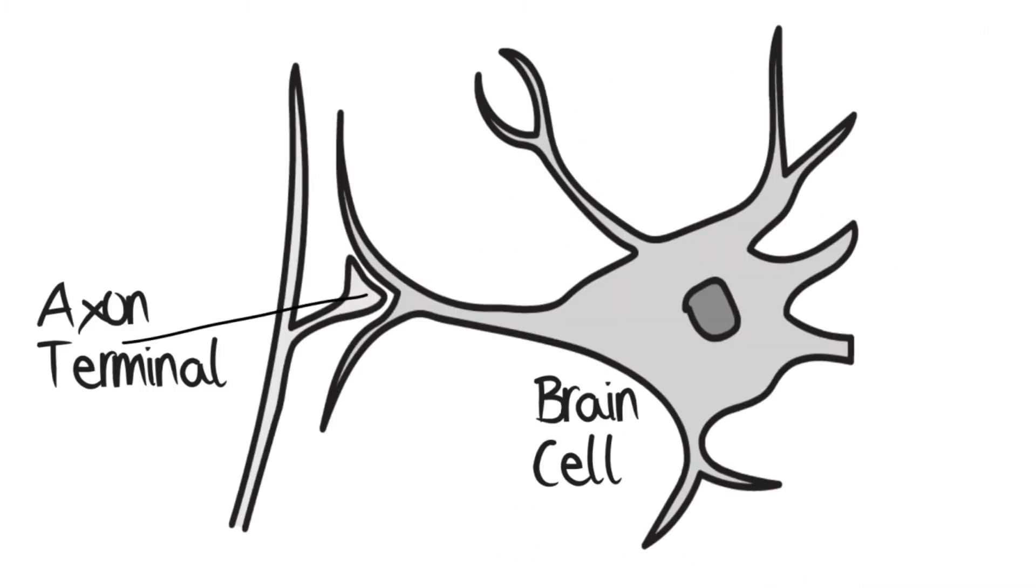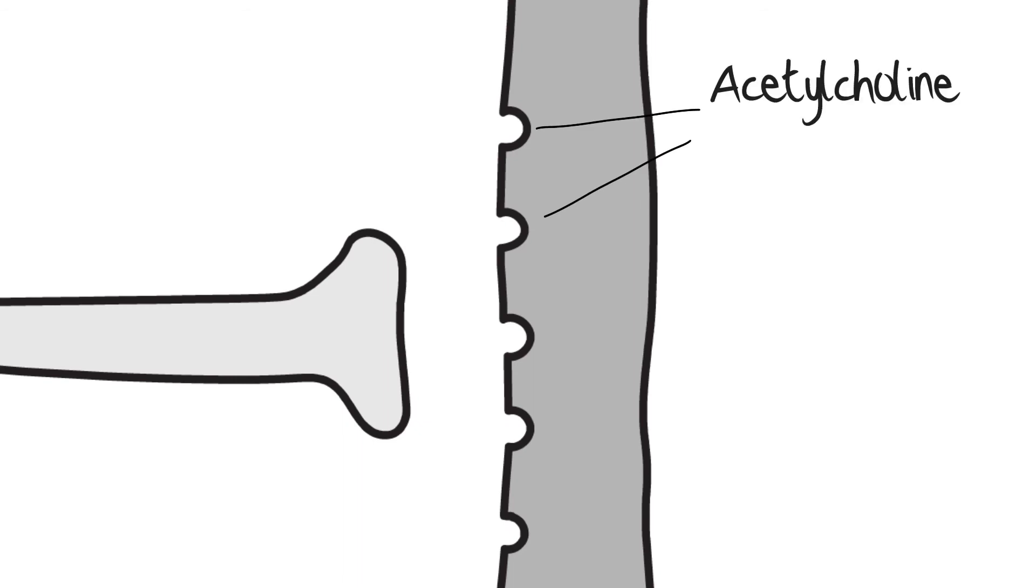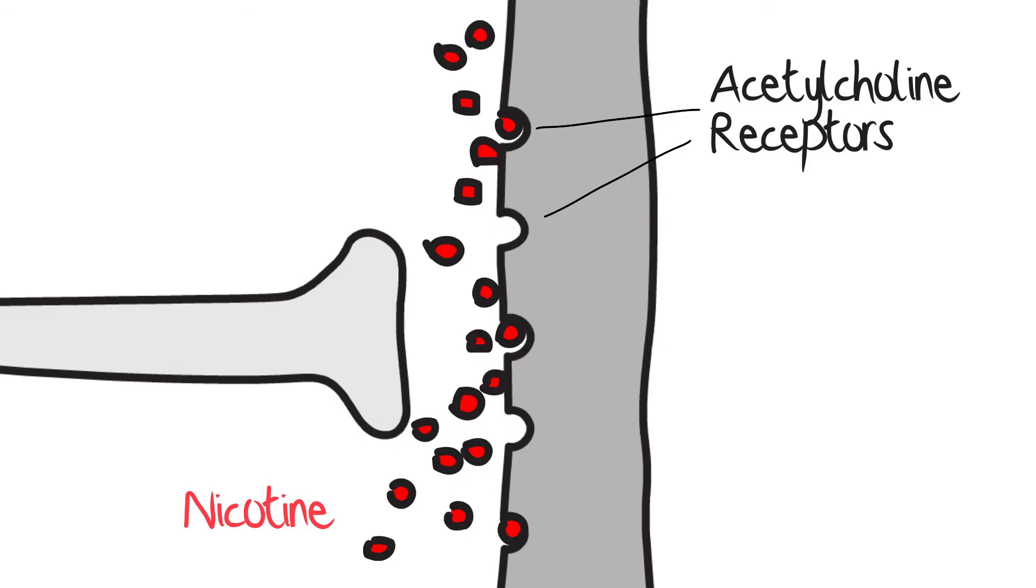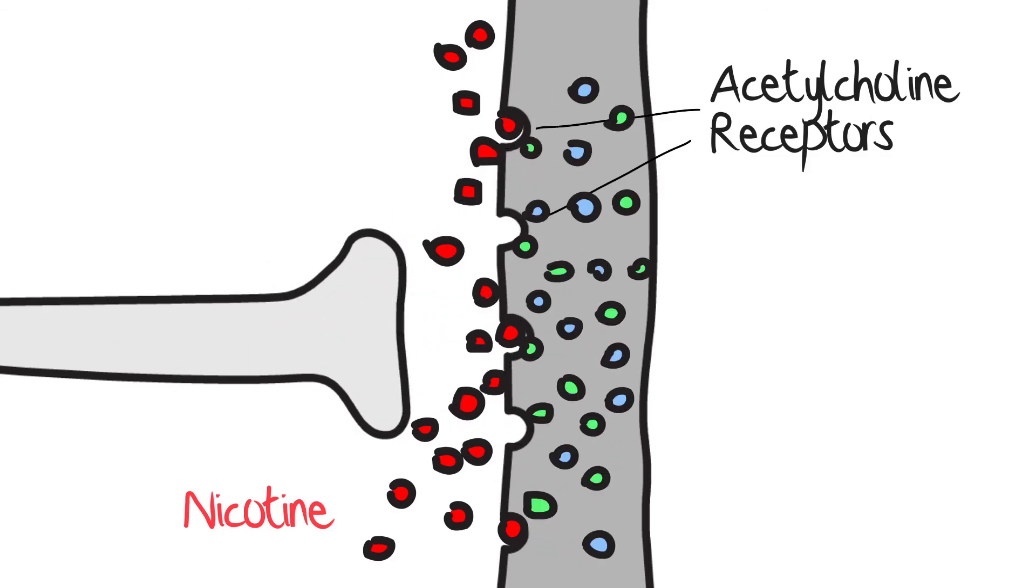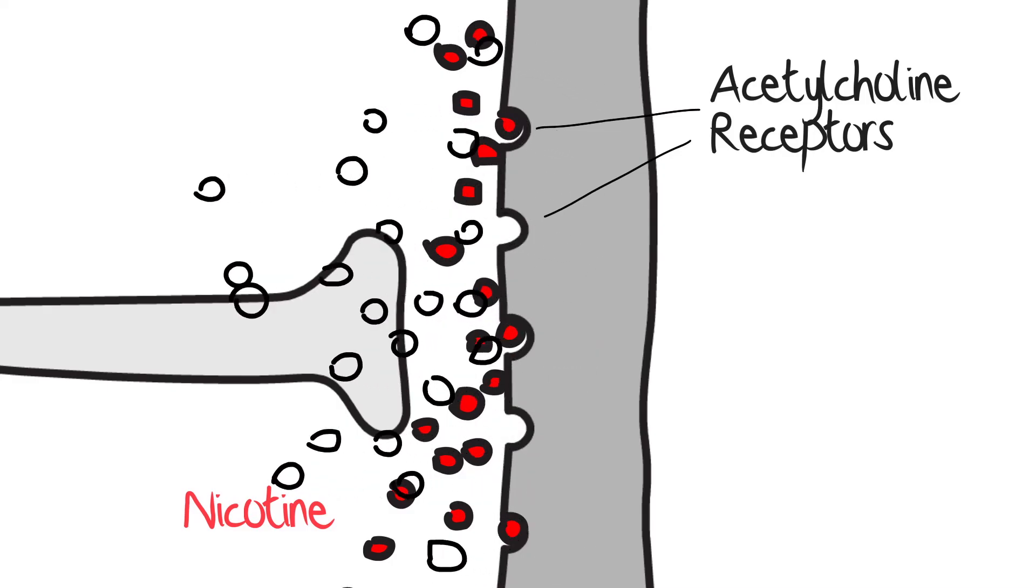Nicotine binds to receptors in the brain and other body systems, such as the cardiovascular system, gastrointestinal system, and peripheral nervous system. In the brain, it binds to ligand-gated ion channel receptors called nicotine acetylcholine receptors. When nicotine binds to these receptors, it opens the channel to allow sodium and calcium into the neurons, which causes reactions within the neurons and allows them to release various neurotransmitters into the brain.